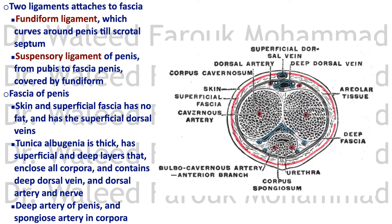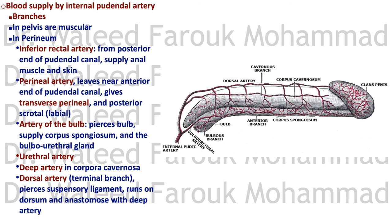There is a deep artery of the penis running in each corpus cavernosum, and a spongiosal artery that runs in the corpus spongiosum. This is the blood supply of the penis, as seen in cross-section and longitudinal section. It comes from the internal pudendal artery, which gives the inferior rectal branch from the posterior end of the pudendal canal to supply the anal muscle and skin.